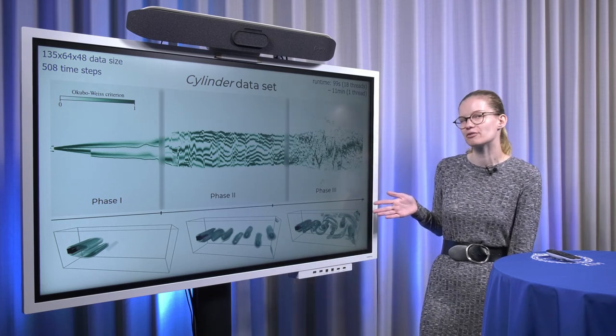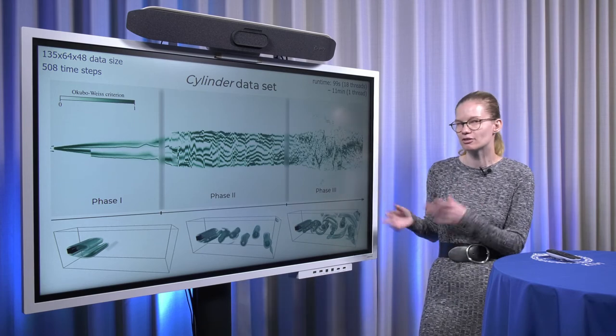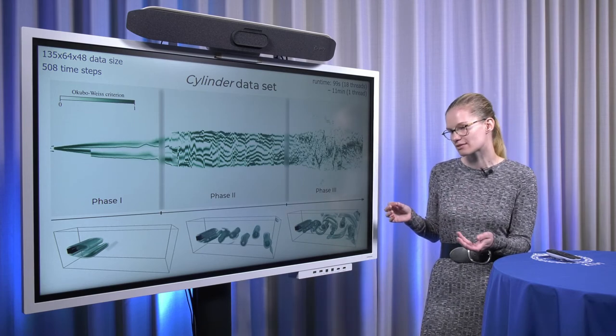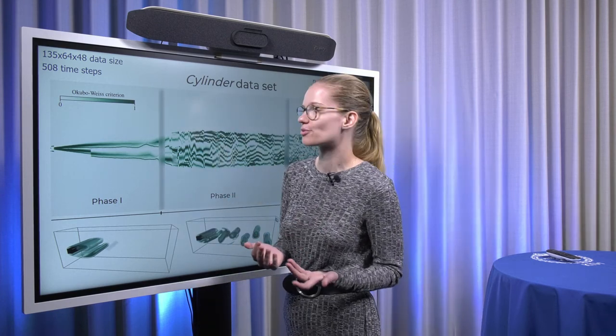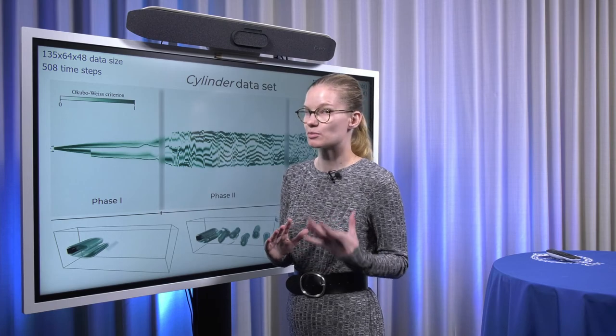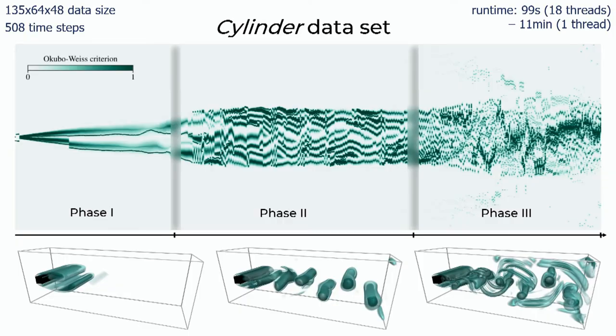This dataset is a bit larger than what we have before, and it is also 3D, but the number of time steps is a bit lower. In terms of runtime, it takes about 99 seconds to compute this on 18 threads, and about 11 minutes if we just go with a single thread. However, again, most of the time is spent in extracting the topology, and it takes about only 25 seconds in both cases to run the optimization.